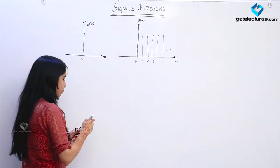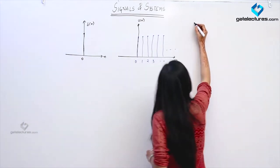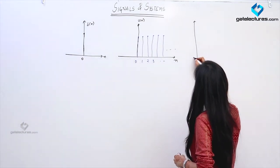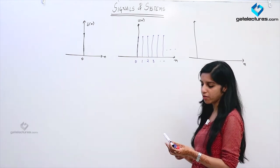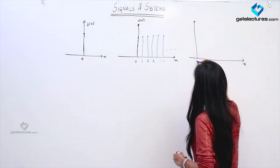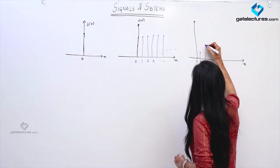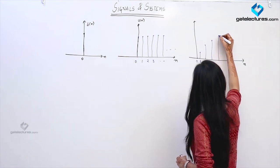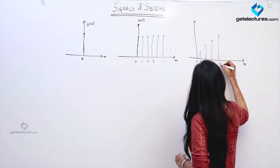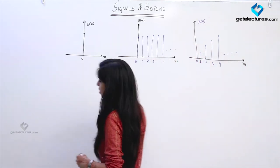Similarly, the unit ramp signal has value equal to n for each n value — that is, for n equal to 0 its value is 0; 1 for n equal to 1; 2 for n equal to 2; 3 for n equal to 3, and so on. This is how the unit ramp signal looks like.